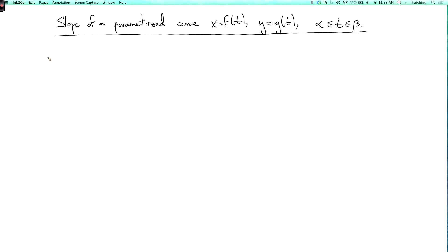I now want to explain how to find the slope of a parametrized curve, x equals f of t, y equals g of t, at some time t.